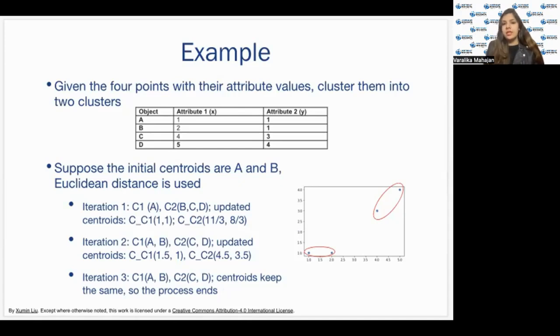So, let us understand this better with an example. Over here, you can see there are the four points with their attribute values and we need to cluster them into two clusters. So, we have A, B, C, D. Initially, let's just pick A and B as our centroids, which is 1,1 and 2,1, right? Now, in iteration 1, we calculate the distance. Obviously, A is the closest to since we've chosen it as our centroid. It will go in the first cluster.